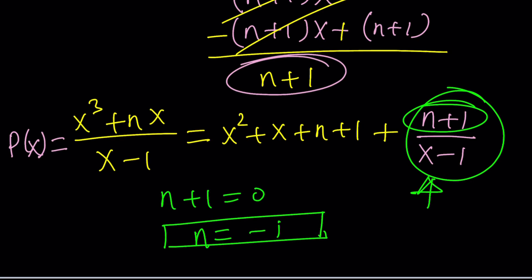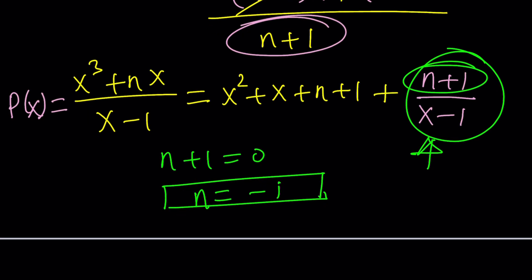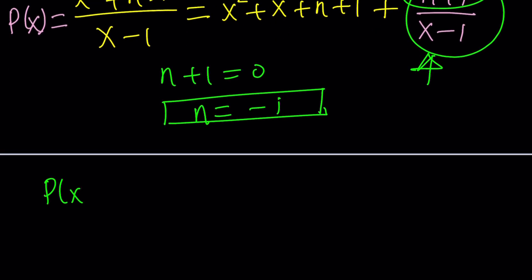Again, this does not solve the problem completely because we want to find p of x as well. So what can we do? Plug it in. If you plug it in, you're going to get p of x equals x cubed minus x divided by x minus 1, which is supposed to equal x squared plus x plus n plus 1, but n is negative 1. So that's just going to be x squared plus x, right?